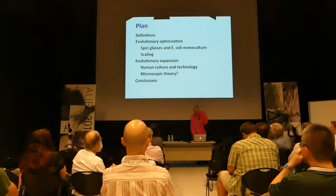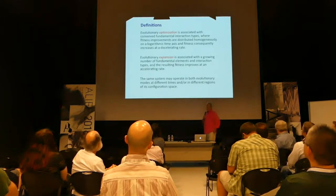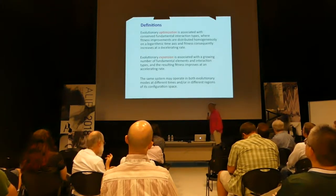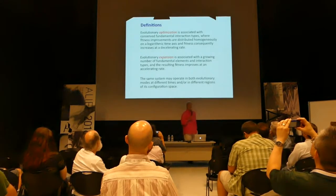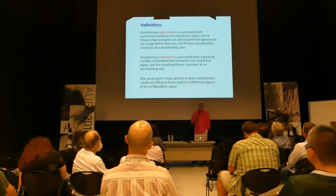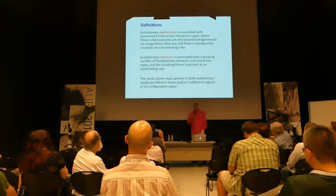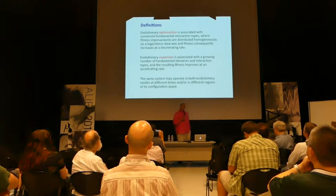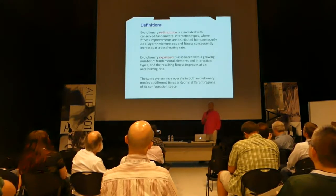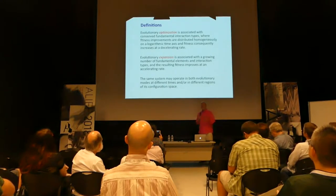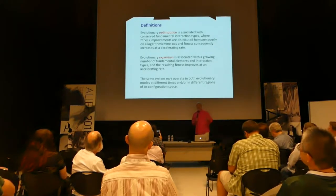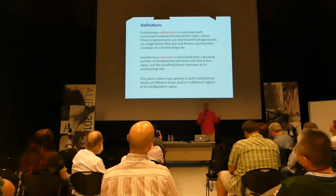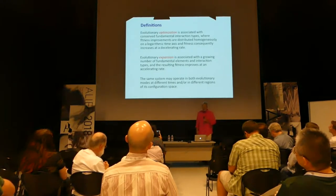I'll go out and process some of this big data we have out there. Evolutionary optimization is a process that operates on a set of entities that does not change over time, where you can consider both the kind of entities and their interactions to be constant. As long as you have such a system, you can only have optimization. If you expand on the number of entities and their interactions — qualitatively different types and qualitatively different interactions — then you actually expand the configuration space, and you'll have what we call evolutionary expansion. Many systems actually have both — they can both be optimizing and have expansion dynamics in them.